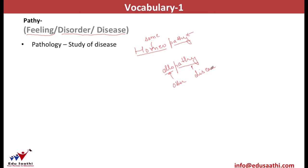Another word that relates to pathi taking the meaning of disease is pathogen. Pathogens, as we all know, are the disease-causing entities. If I break this word, I get patho and gen. Patho is disease, and gen comes from genetics, meaning it relates to families. So pathogens are the disease-causing families.